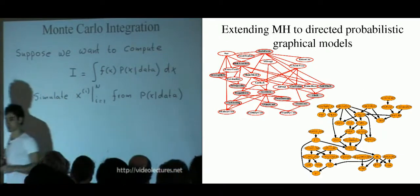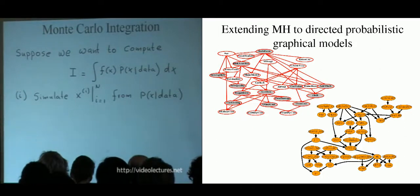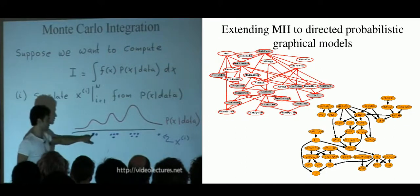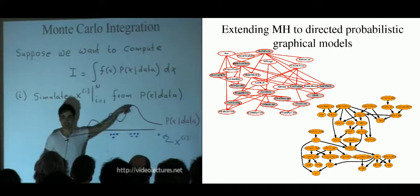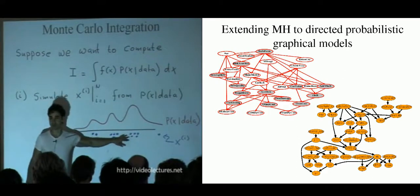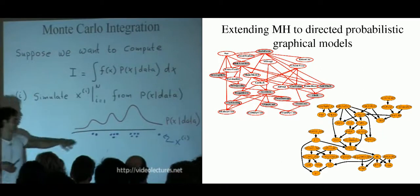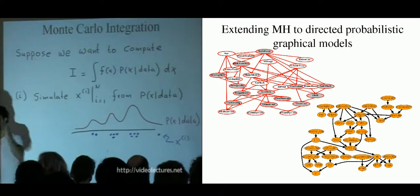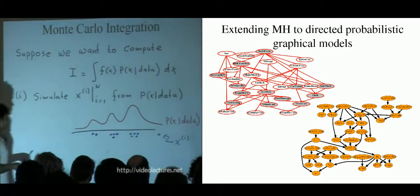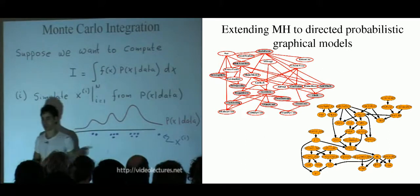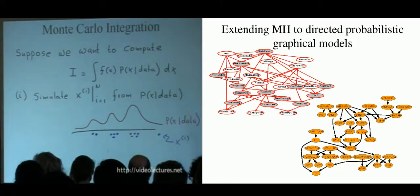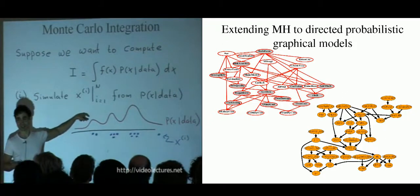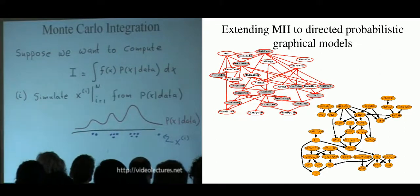This is how we do Monte Carlo for these problems. We simulate a bunch of points from this distribution. The whole point of these lectures is how to do that simulation. This is the inverse of learning: in learning we have data points and construct a kernel density estimate; now we have the distribution and generate the data.